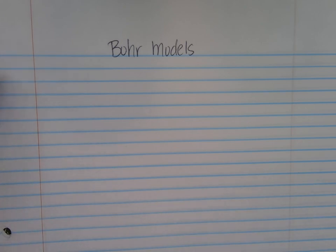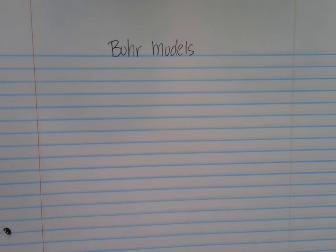Today we're going to be looking at drawing Bohr models using the electron configuration. We do need to remember that Bohr models are not accurate. We know that electrons do not exist in rings around a nucleus — they are in orbitals like the S, P, D, and F orbitals, using the electron cloud model. But it is still a really useful model, so we're going to learn how to draw Bohr models using an electron configuration.